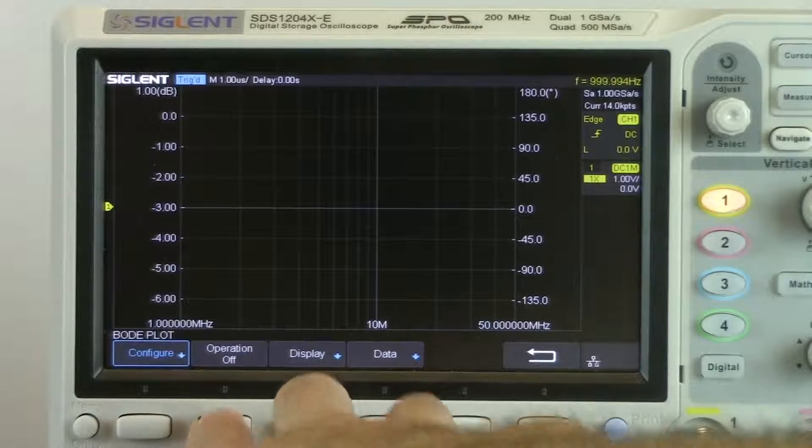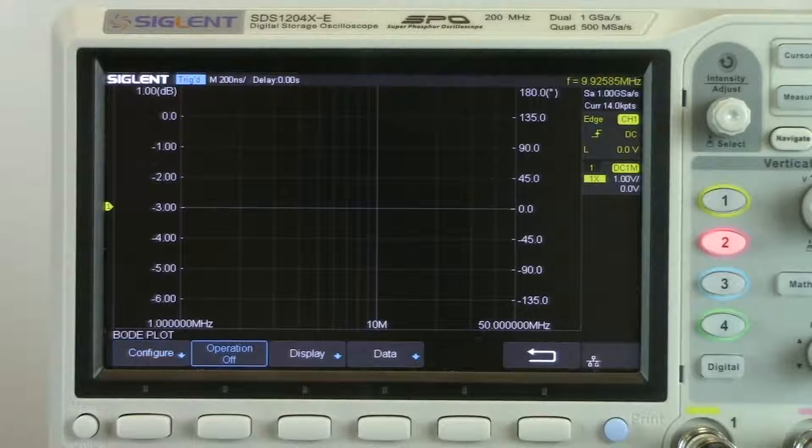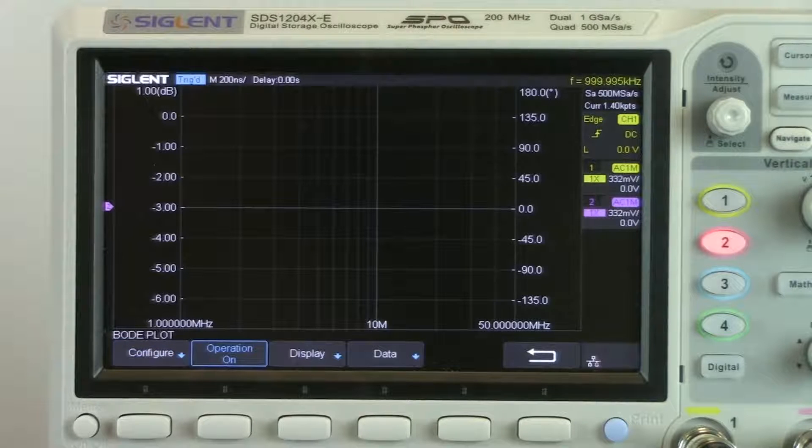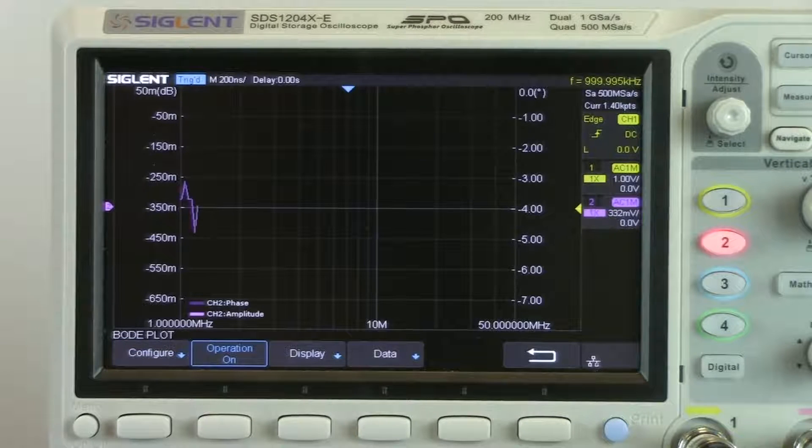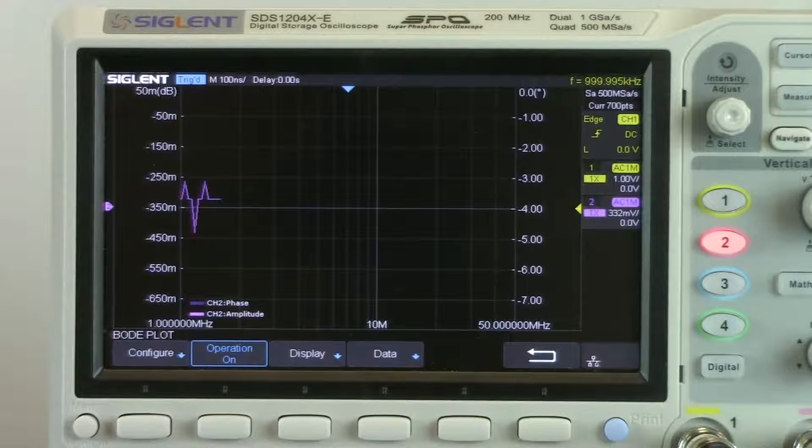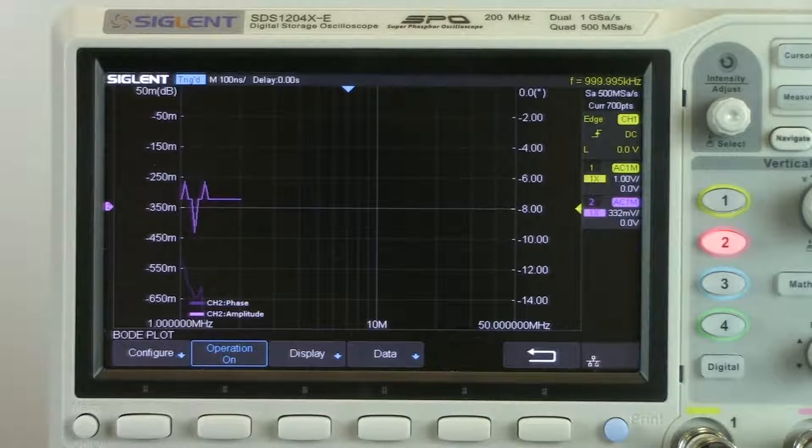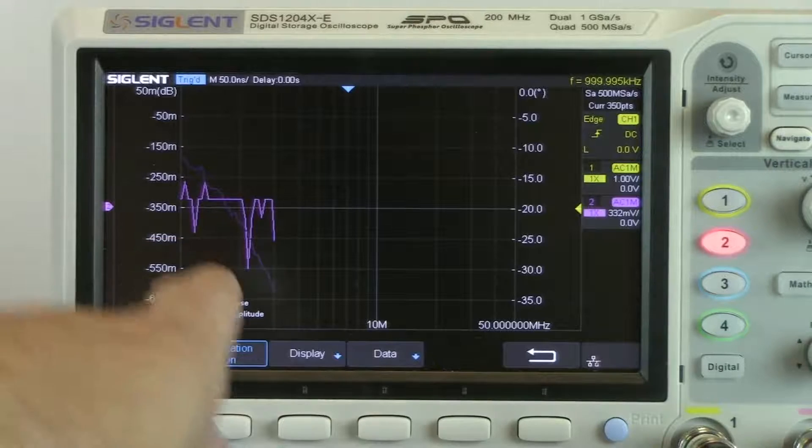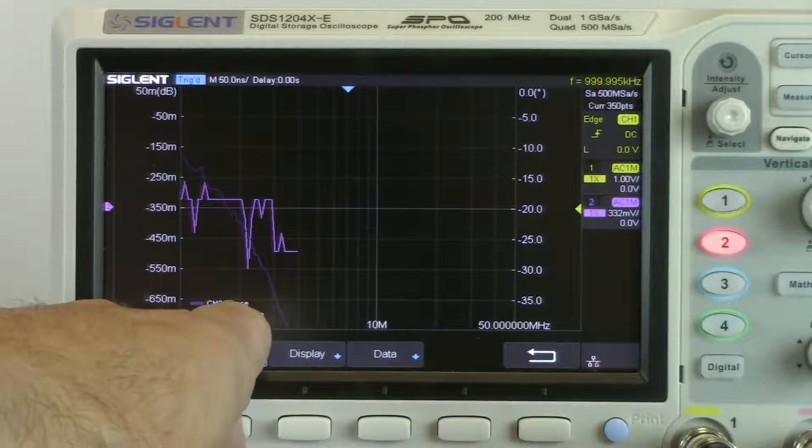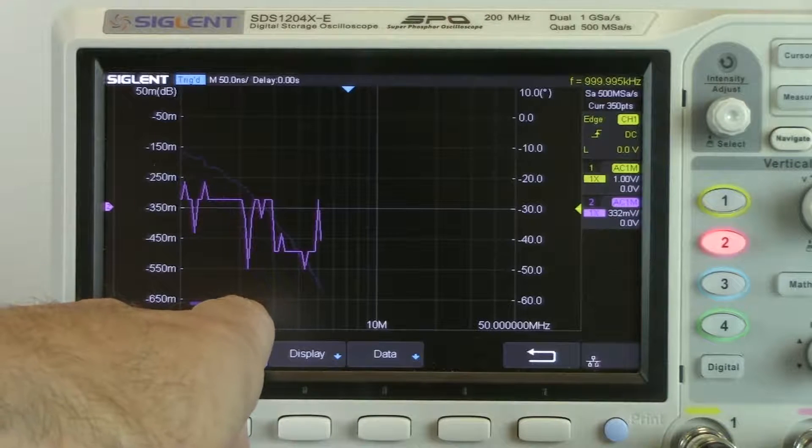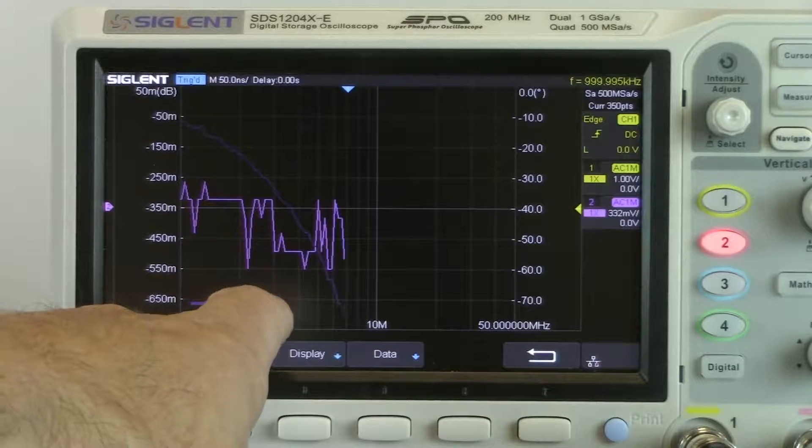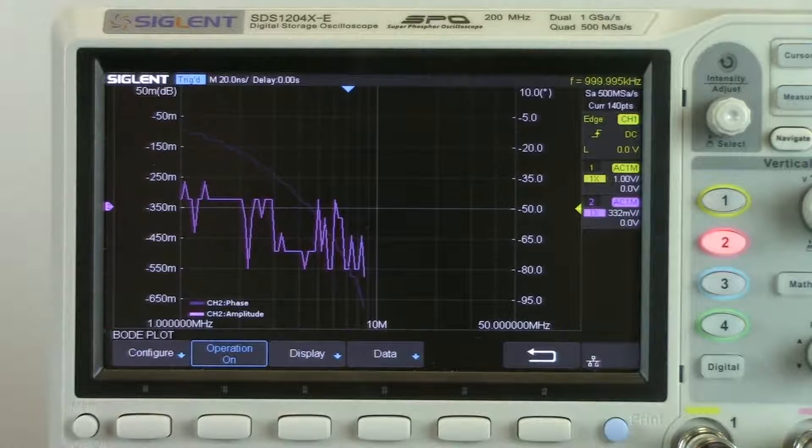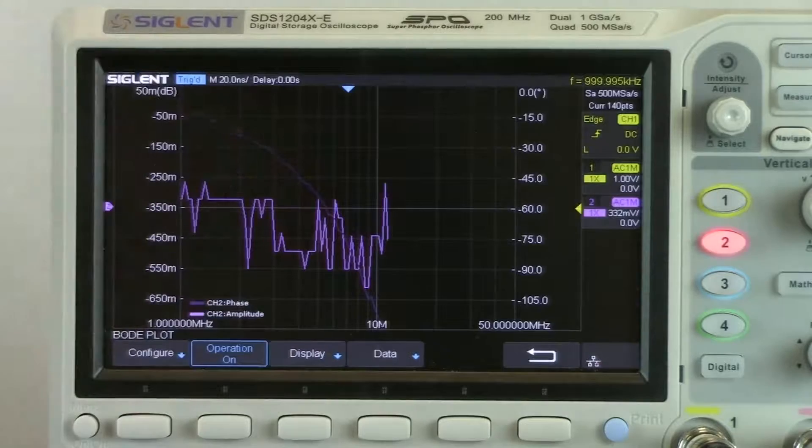I'm just going to turn it on. And so now the output of the generator is changing. And we can see that we're actually getting, in this case we've got the amplitude in light pink and we've got the phase in dark pink or purple, depending on how you want to classify that. And you can see we're slowly collecting that data.